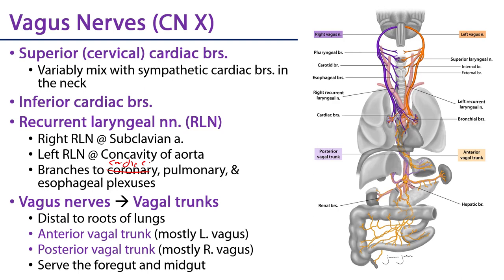Keep in mind there's asymmetry with respect to the pathways of the recurrent laryngeal nerves. The right recurrent laryngeal nerve wraps around the subclavian artery heading toward the tracheoesophageal groove. The left wraps around the concavity of the aorta, so the left is much lower than the right as it goes down.